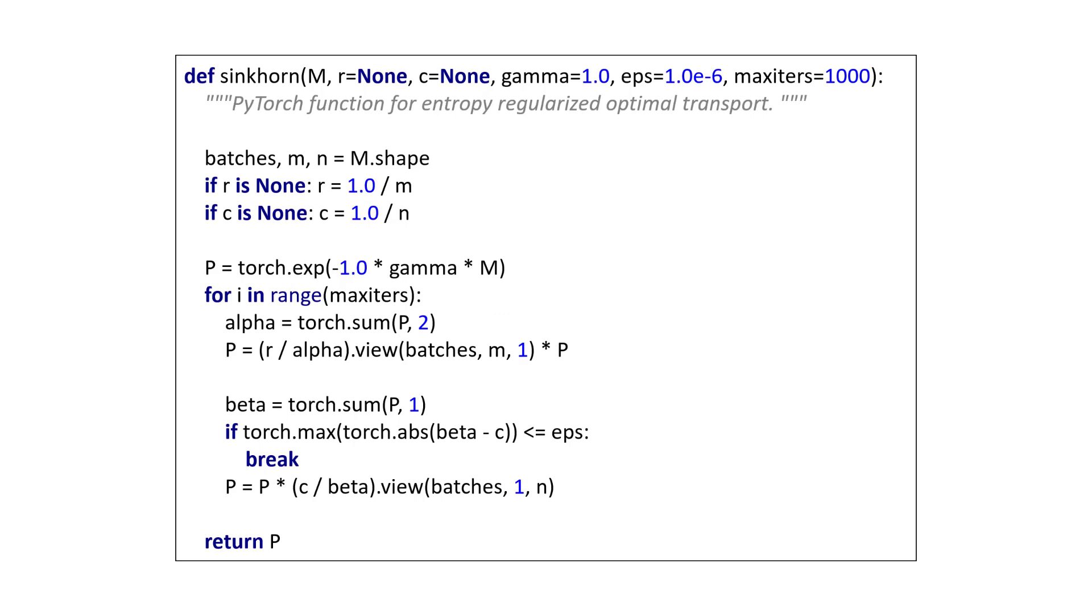And here is a PyTorch implementation of the algorithm that operates on a batch of inputs. The first few lines just extract the problem sizes and set parameters R and C to uniform distributions if not provided. If R and C are provided, they must sum to one. Next, we initialize P to the positive matrix obtained by exponentiating scaled entries of the input M. The scaling factor is minus gamma.